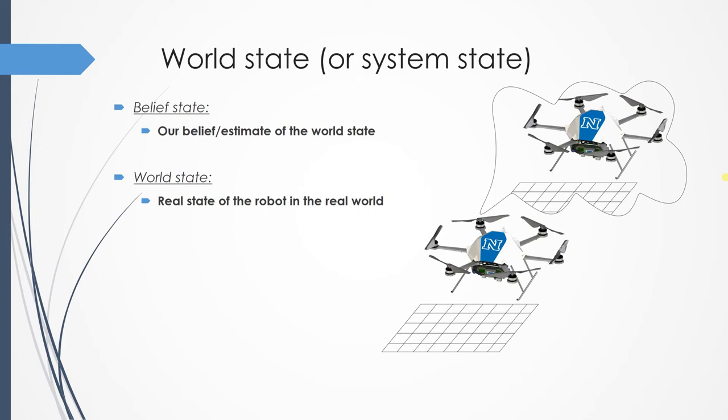These are the two terminologies we need to know. We actually want to understand, to infer the world state, which is the real state of the robot, but in fact we have just an expected information about the belief state, which is our estimation about the real condition of the robot. The goal is to make these two states converge.